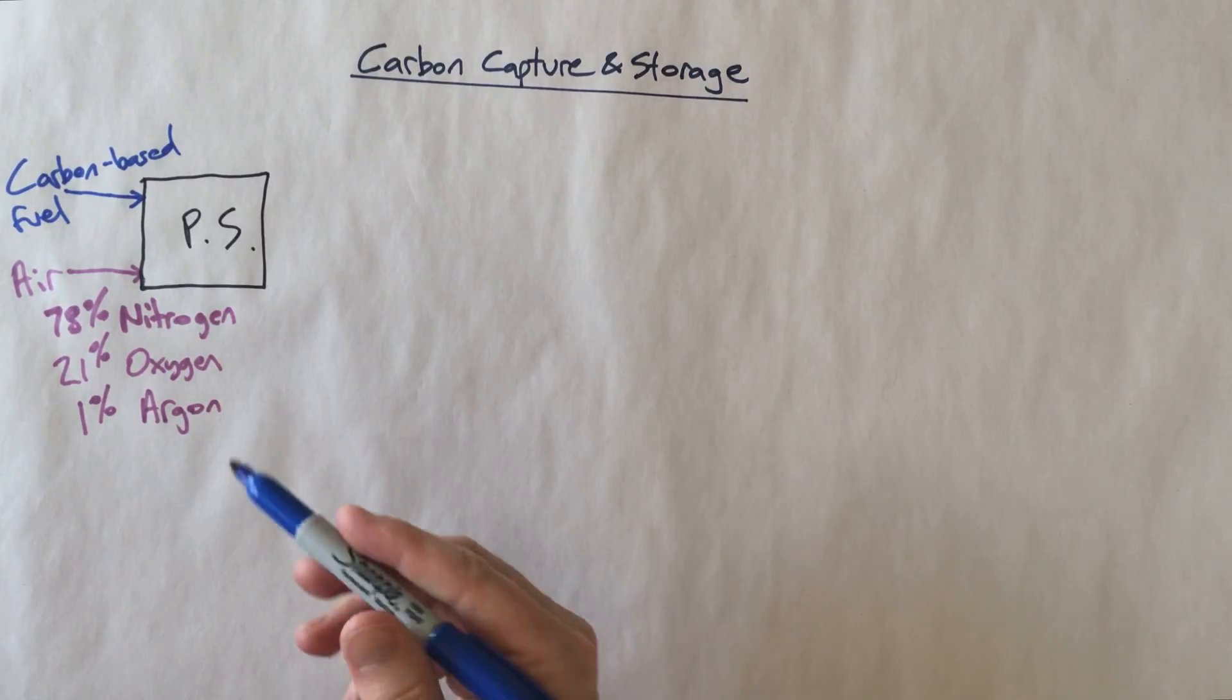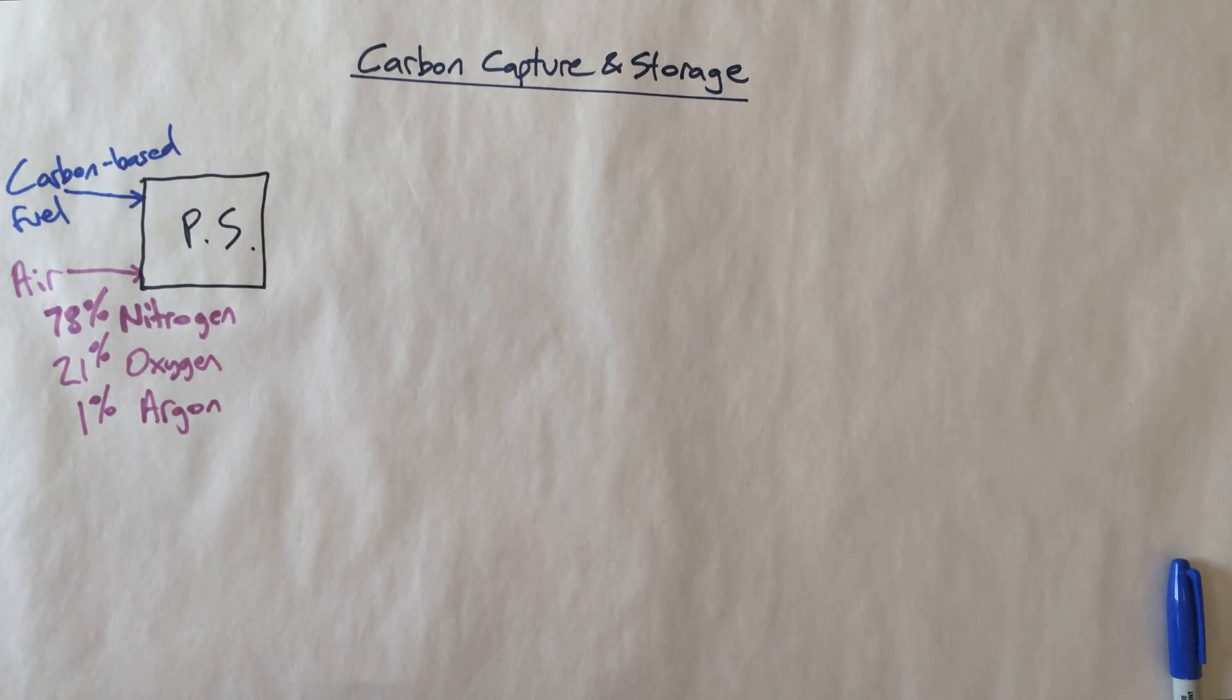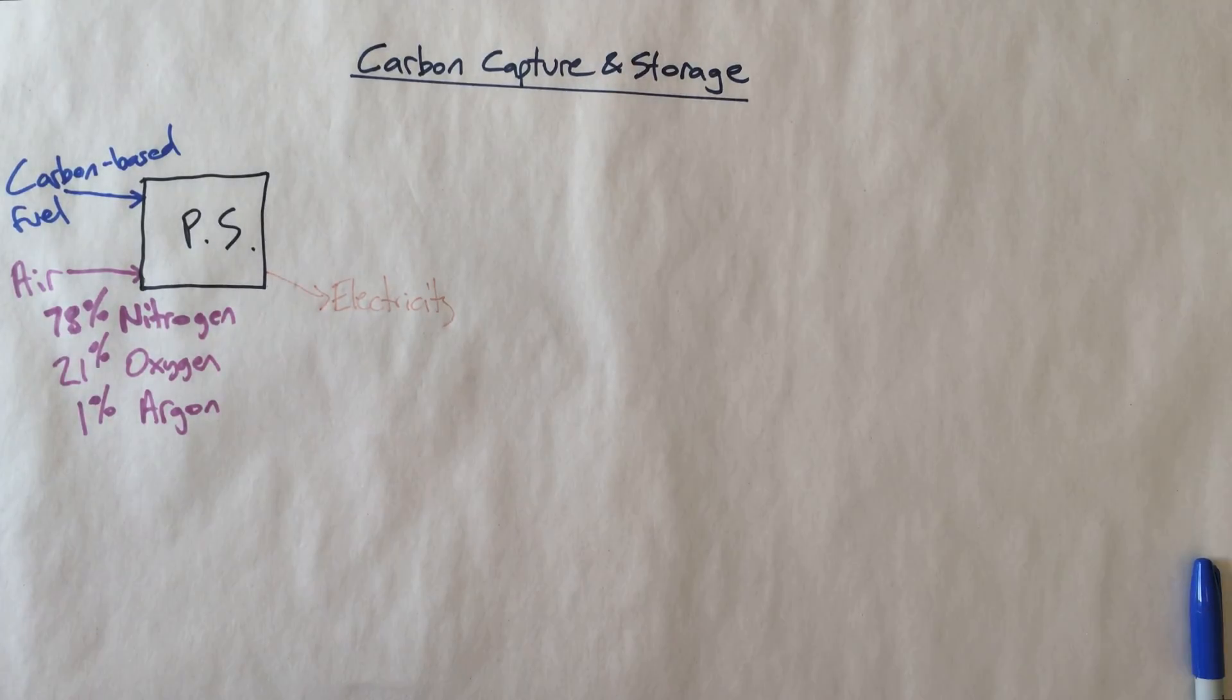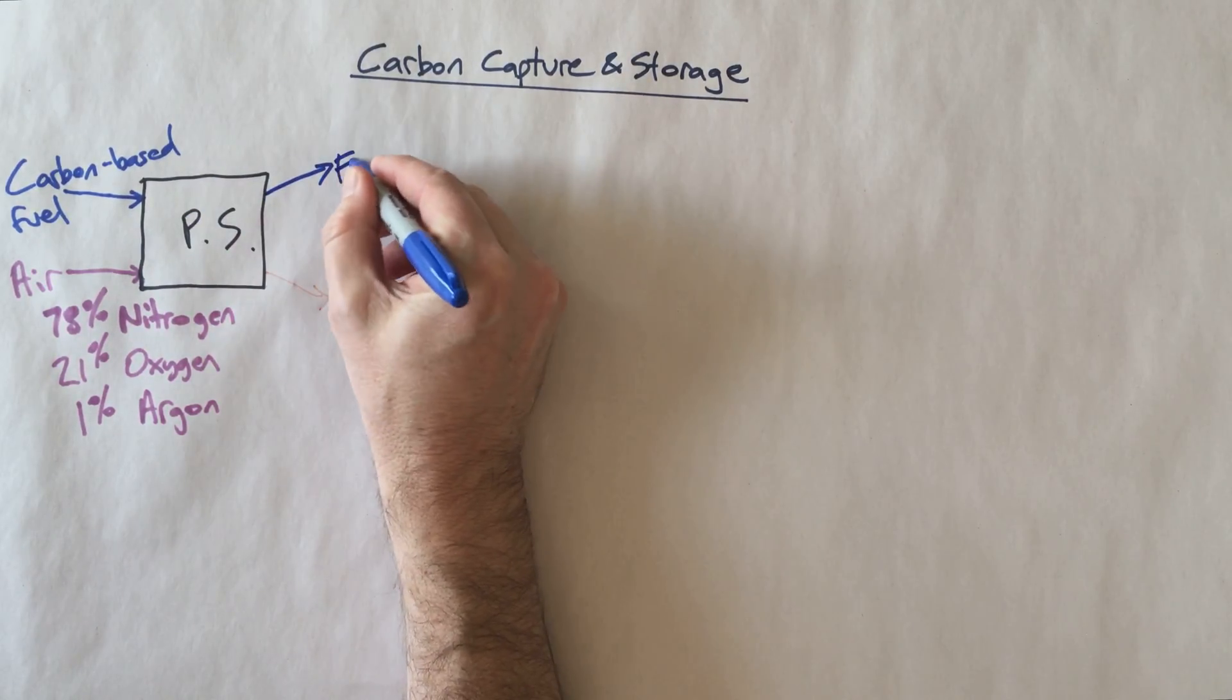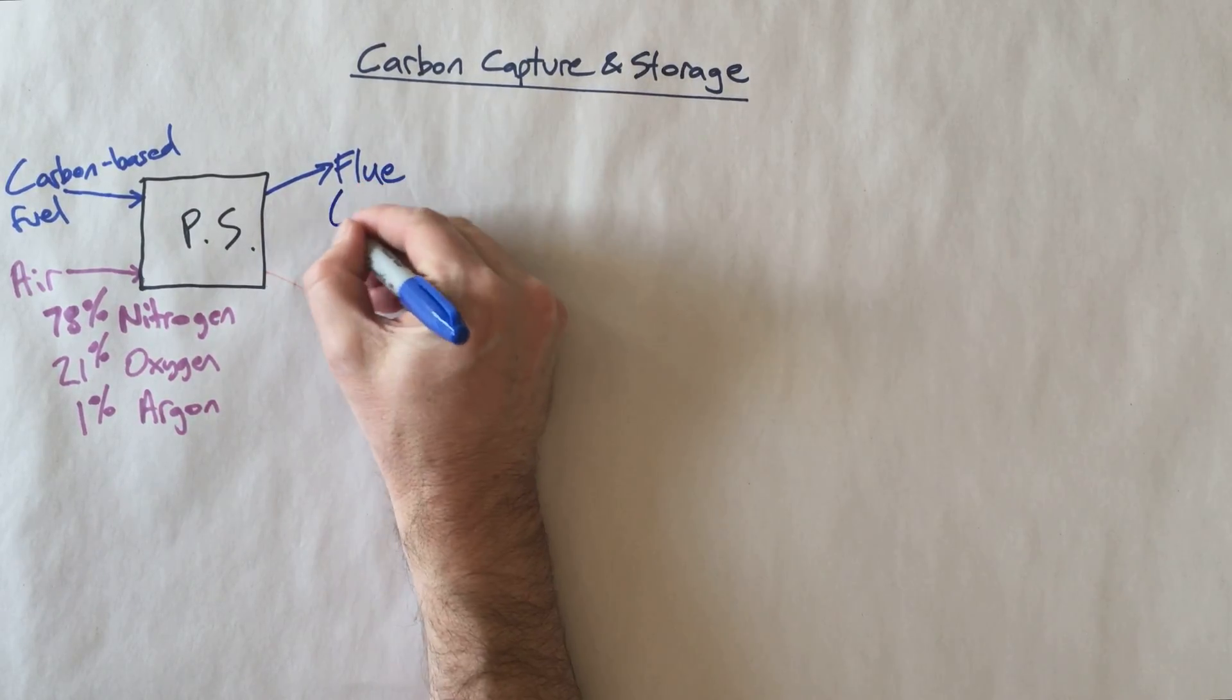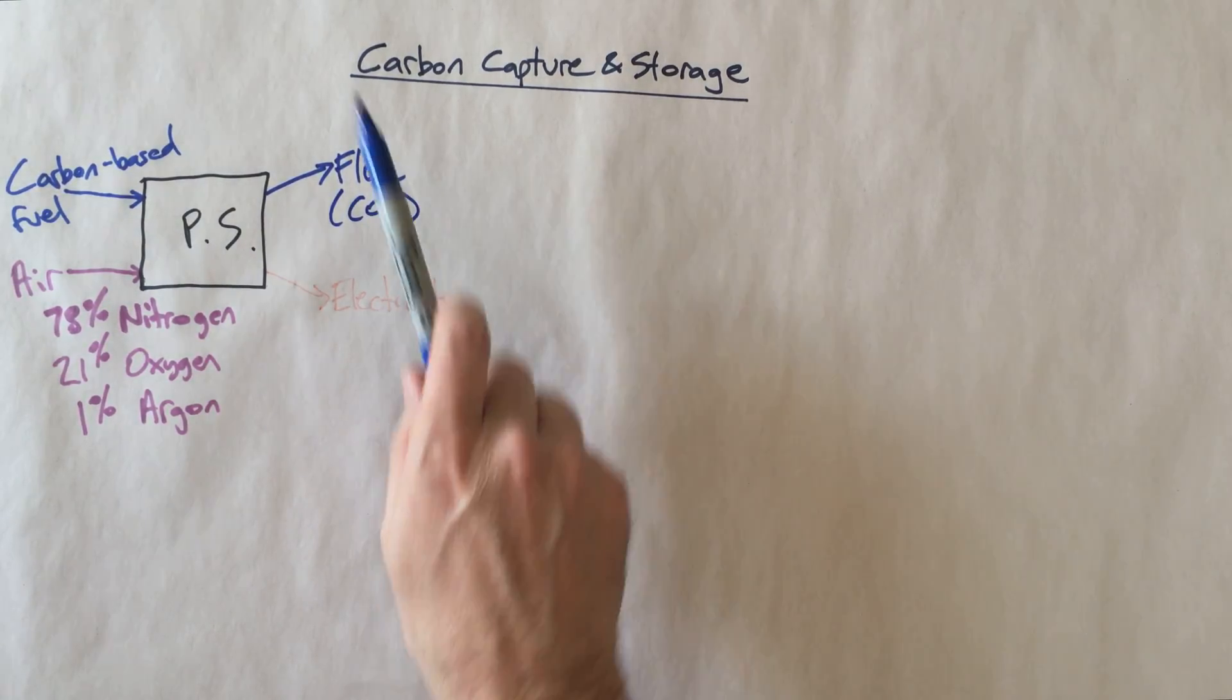And what do we get when we run our power station? Well, of course we get some electricity, which is I guess the predominant objective of all of this. So we've got some electricity, and out of all of this we produce some flue gases. So what are flue gases? That's the exhaust, the combustion products. Now this flue gas contains, among other things, CO2. So we now have a problem. We have some CO2 going off into the atmosphere, giving us problems with the greenhouse effect.